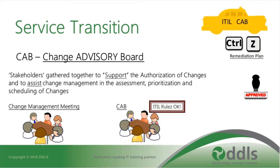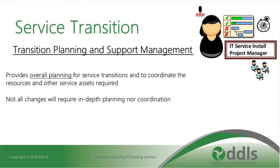A CAB — Change Advisory Board — is not an authorisation board. It is stakeholders gathered together to support the authorisation of changes and assist change management in the assessment, prioritisation, and scheduling of changes. At the end of the CAB meeting we should have a pile of approved changes, which are passed to Transition Planning and Support Management. They provide overall planning for service transitions and coordinate the resources and service aspects required. Not all changes require in-depth planning or coordination — they are performing something similar to a project manager, but for service transition.